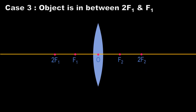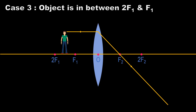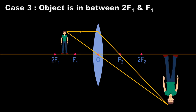Case 3: when the object is between 2F1 and F1. Consider the same two rays — one ray parallel to the principal axis refracts through the lens, and the other passes through the optical center. Consider the point of intersection of these two refracted rays. The image formed is real and inverted, but observe that it is magnified. The position of the image is beyond 2F2.